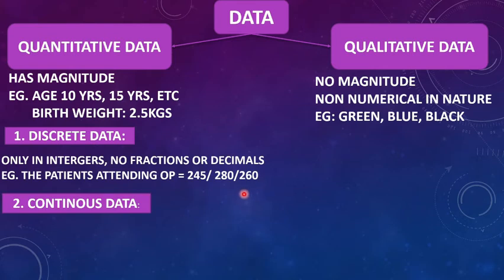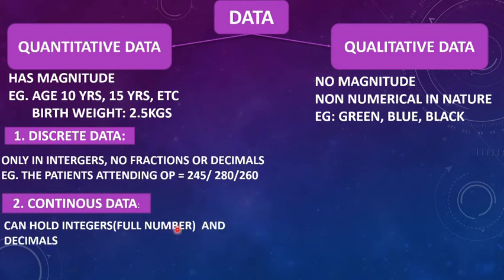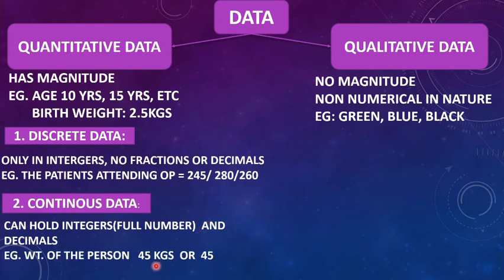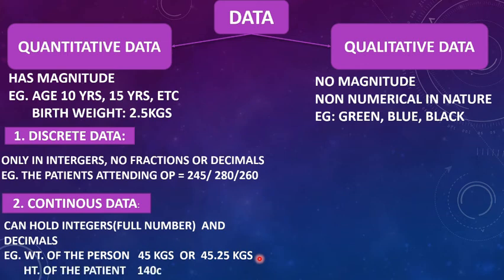The next type is continuous data. Some values can hold any number — that is, they can hold an integer as well as a decimal. For example, the weight of a person can be 45 kgs, which is a full number, or it can be 45.25, which is a decimal. Similarly, the height of a patient can be 140 centimeters or 140.25 centimeters. Such type of data is called continuous data.